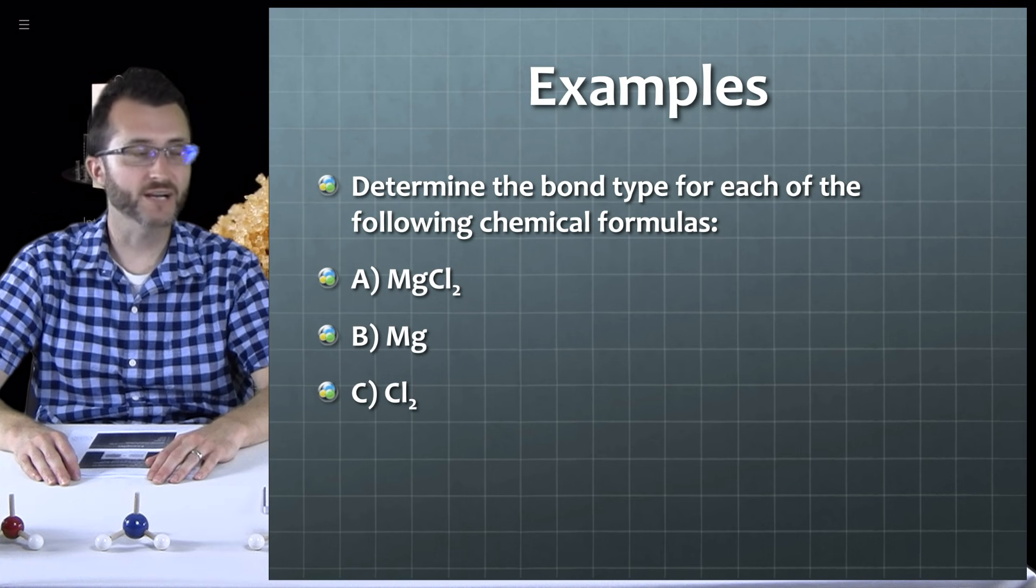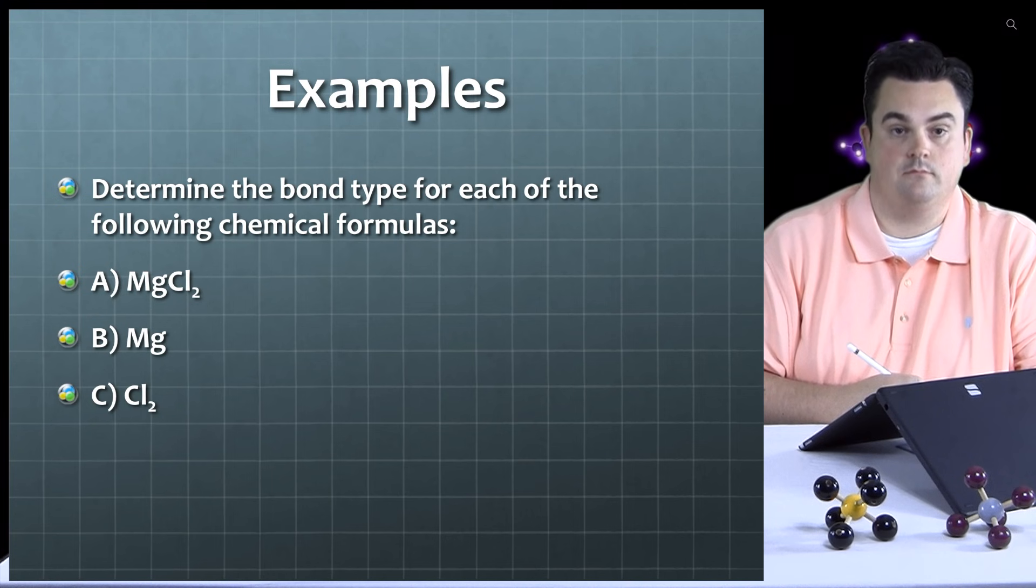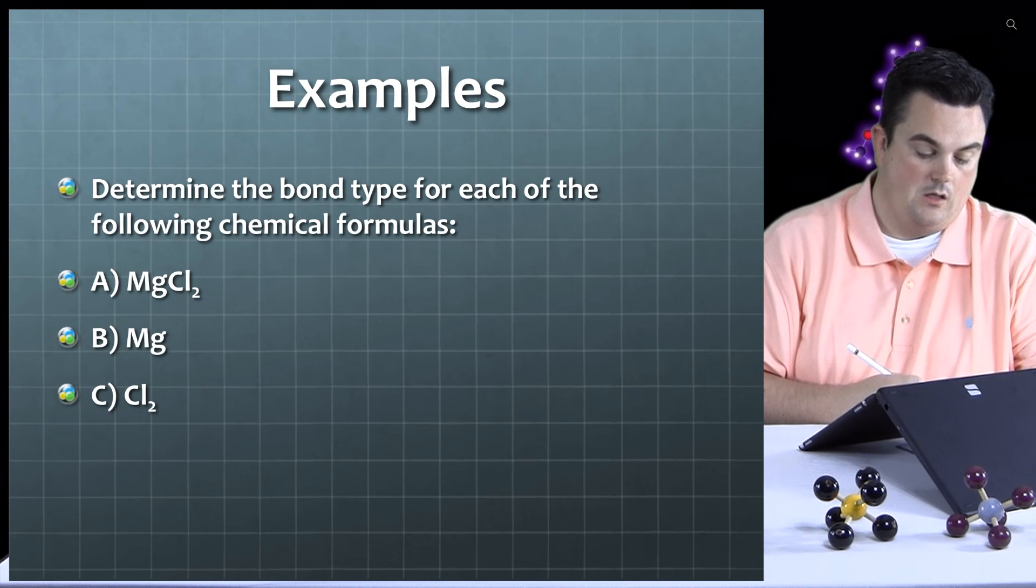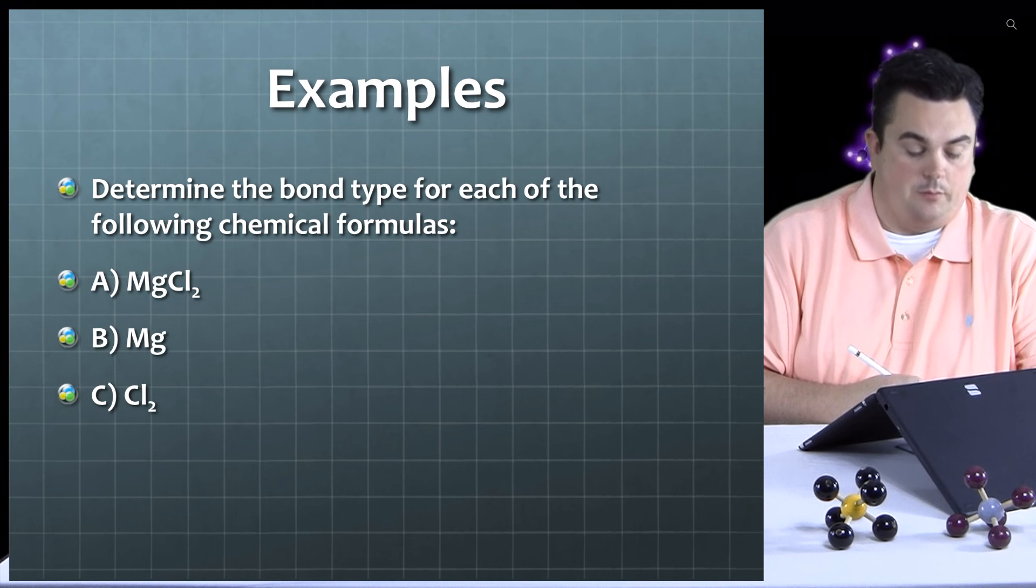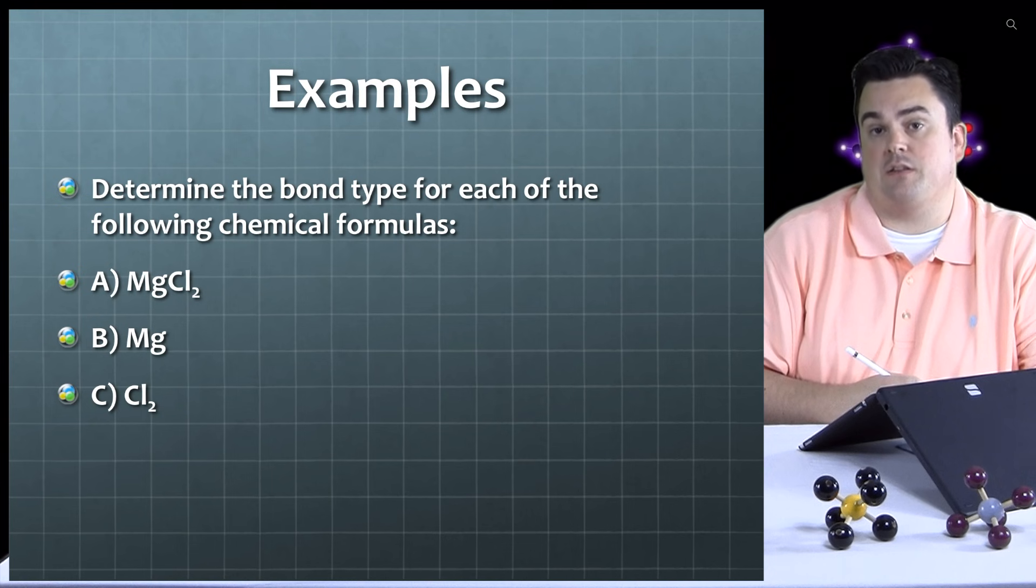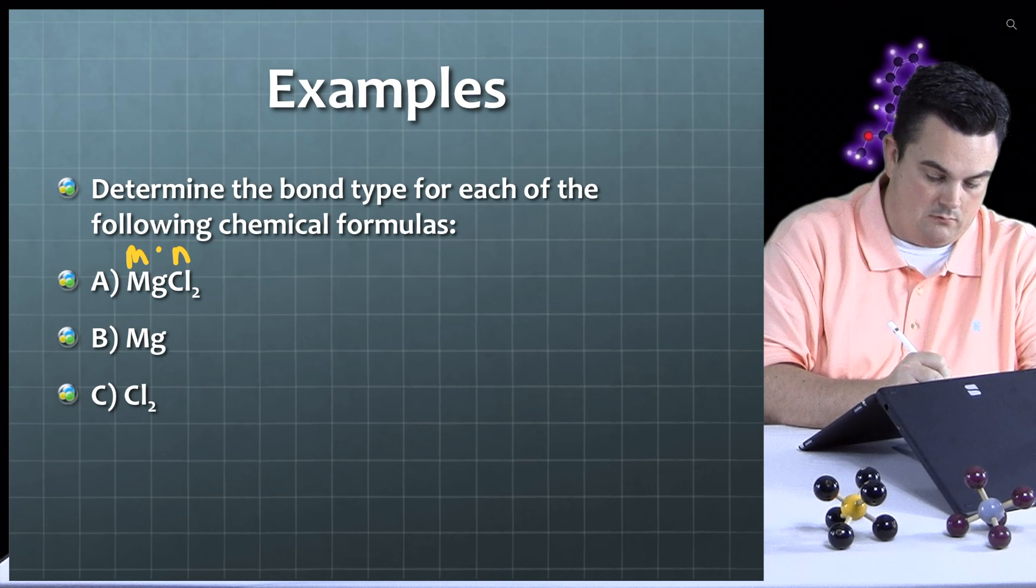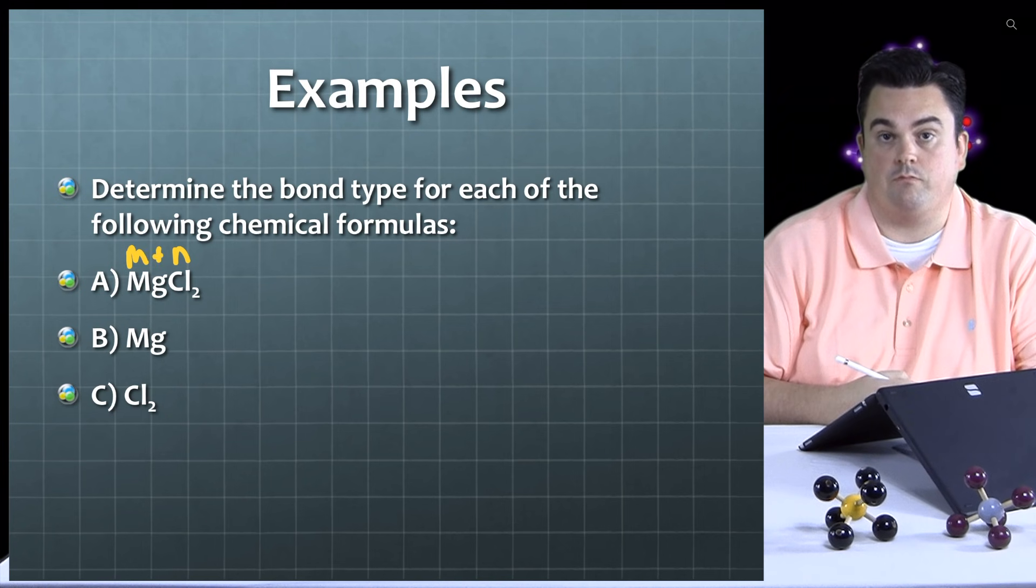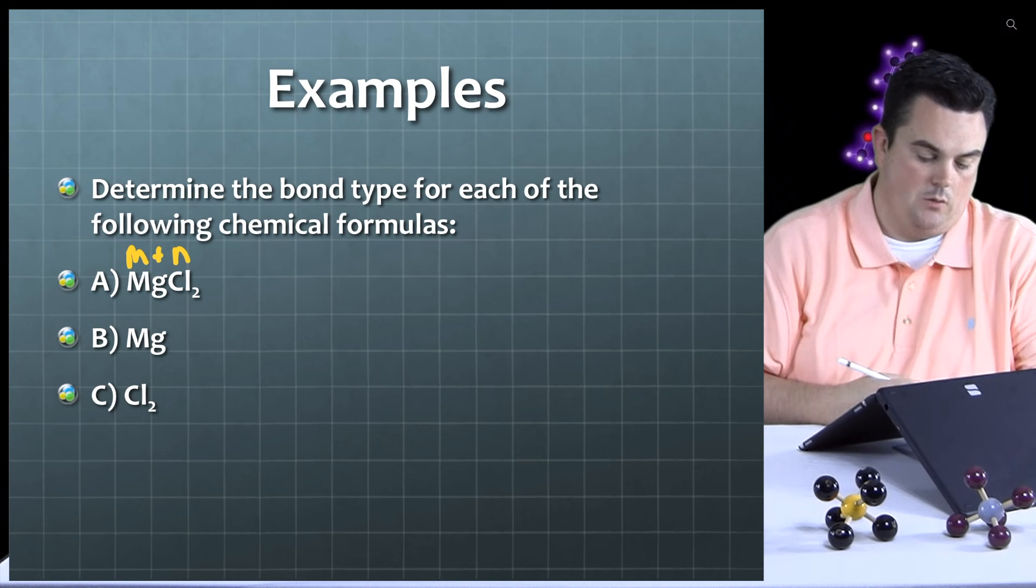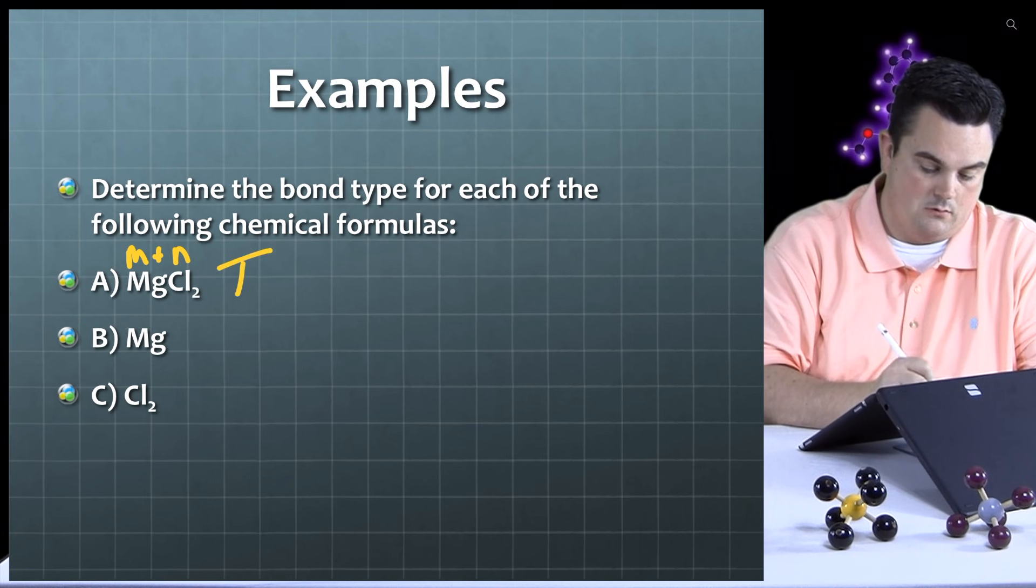Let's take a look at some examples. You ready, Fu? I am. Alright, determine the bond type for each of the following chemical formulas. A, MgCl2. Let's take a look at the elements that are in this compound. How would you classify Mg on the periodic table? Well, looking at my periodic table, the Mg is far to the left, so that makes it a metal. And Cl is on the right of the staircase, making it a non-metal. So I have a metal and a non-metal. Alright, so based on those two elements being present, what type of bond should this be? Well, metal and non-metal is pretty much right on the definition for ionic bond. Good, so we have an ionic bond for MgCl2.